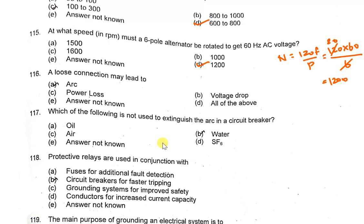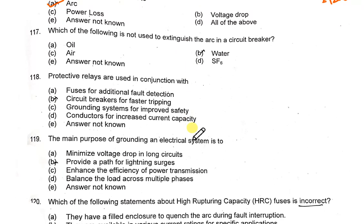A loose connection may lead to an arc. Which of the following is not used to extinguish the arc in a circuit breaker? Obviously, it is water.